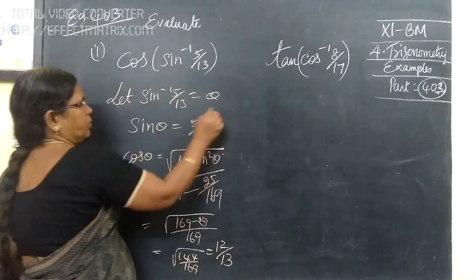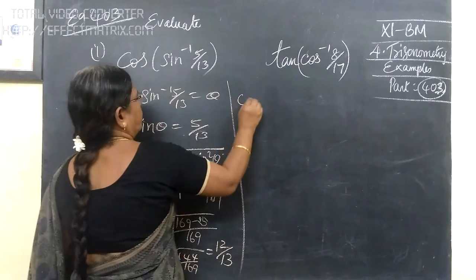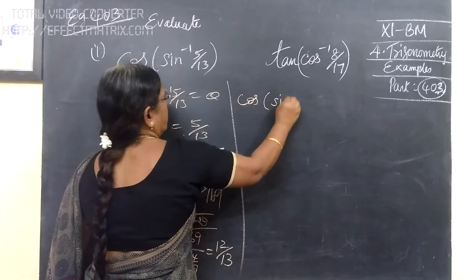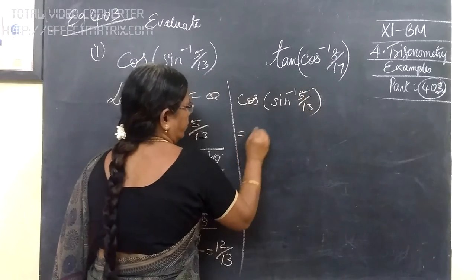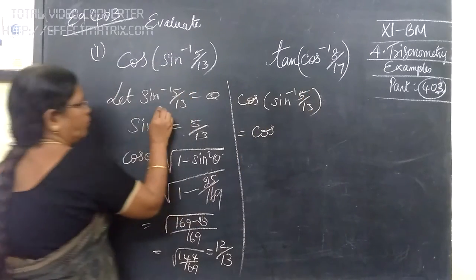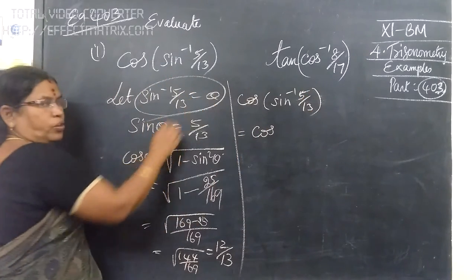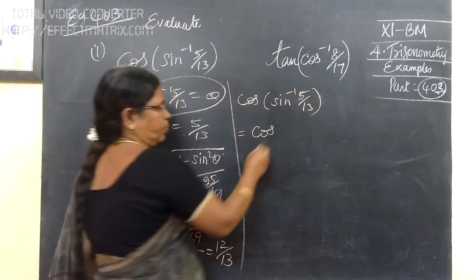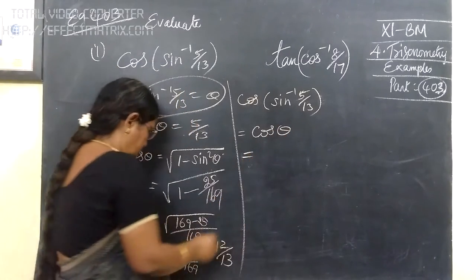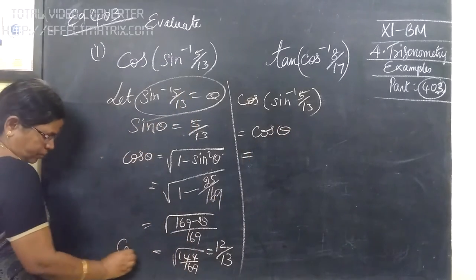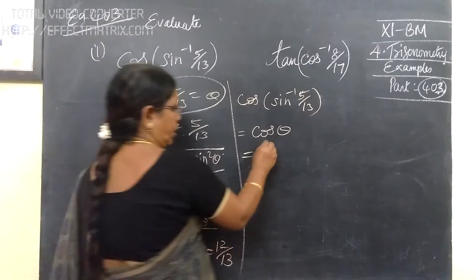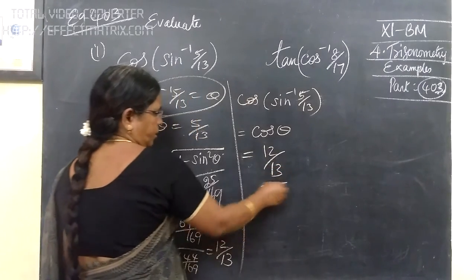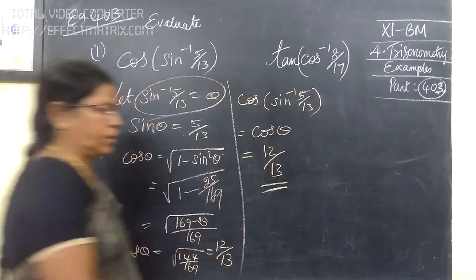This will be the answer. Therefore, cos(sin⁻¹(5/13)). Let theta be theta. Then cos theta, which is nothing but 12 by 13. So, answer is 12 by 13. So, answer is 12 by 13. Now we come to the second one.